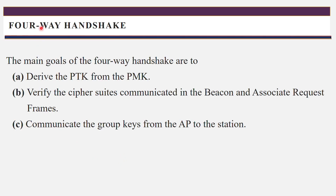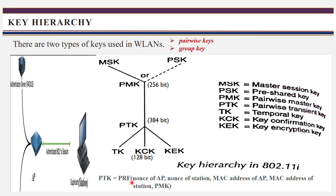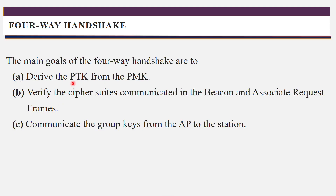Next is the four-way handshake. The main goal of the four-way handshake is to derive the PTK from PMK. You already know how we get the PTK — by applying the pseudo random function to the message using PMK. To perform or derive this PTK, you use the four-way handshake. The first goal of the four-way handshake is to derive the PTK.